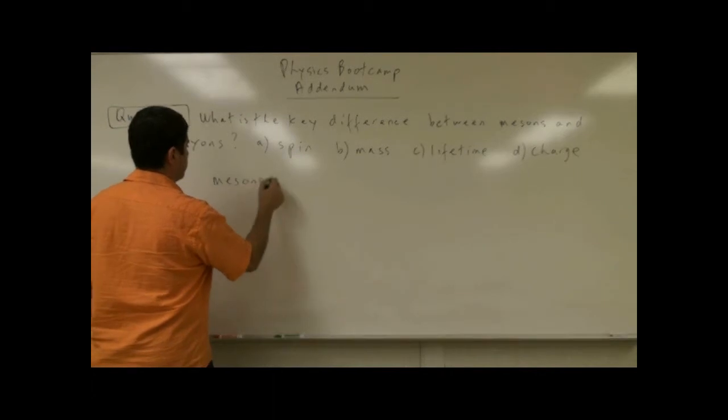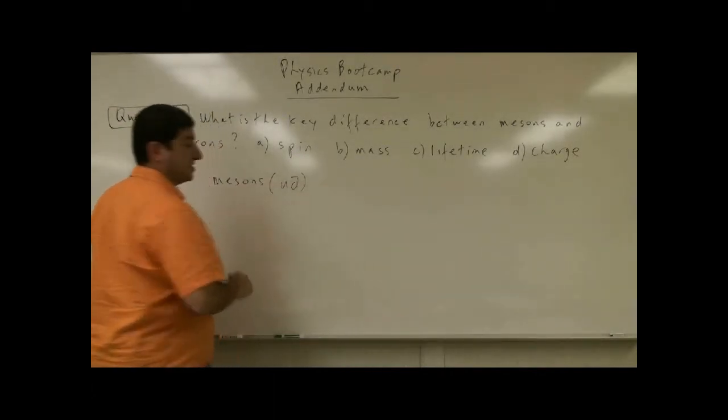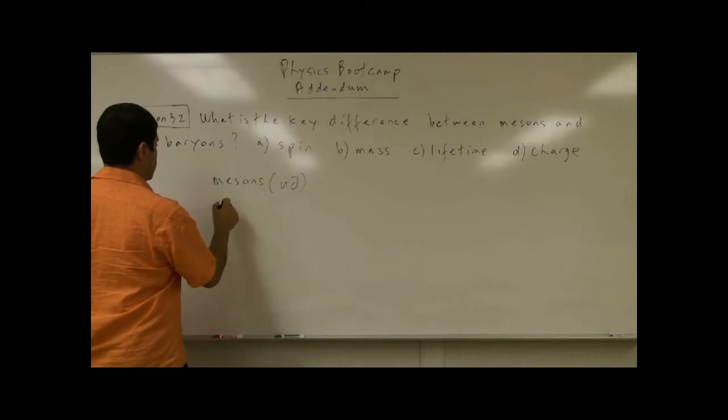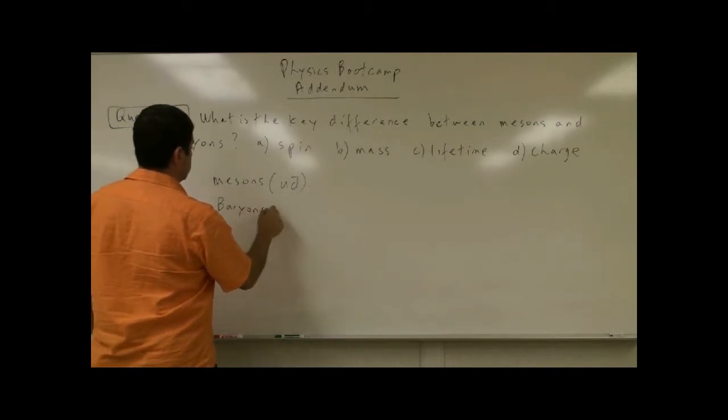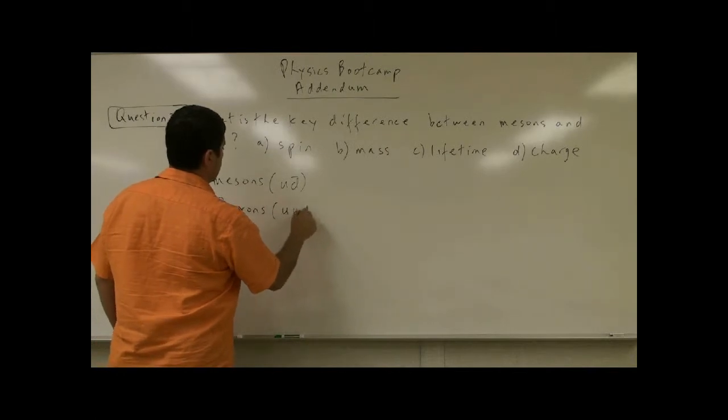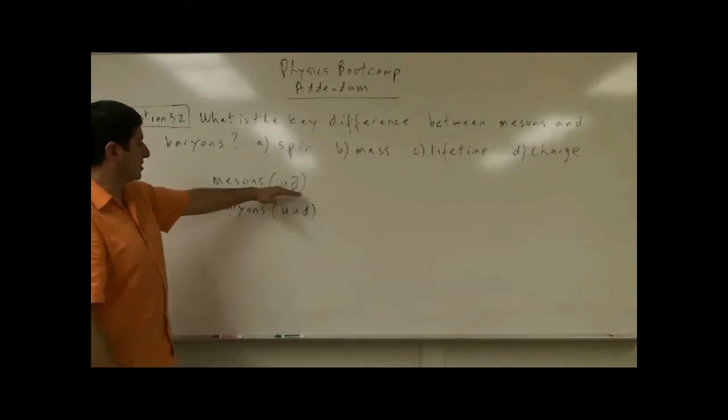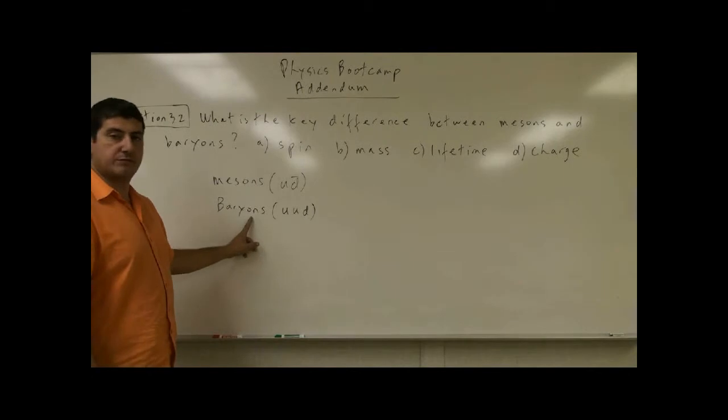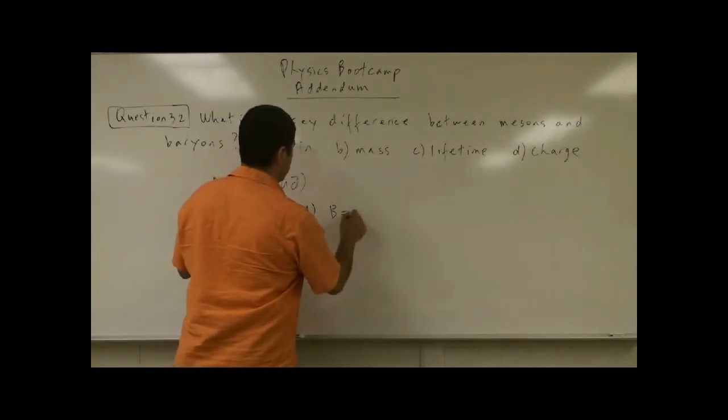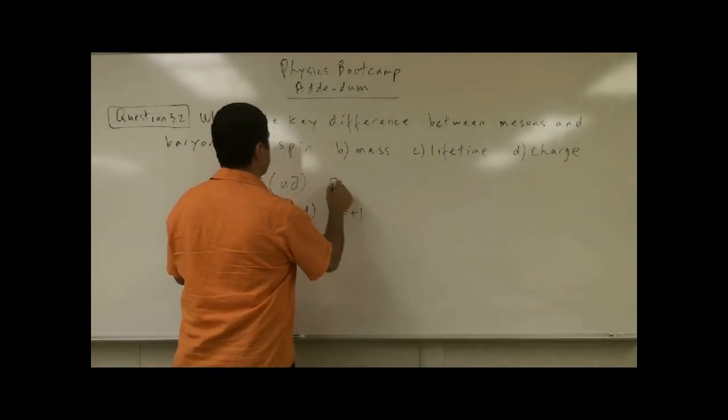So let's put this up here, such as up anti-down, and baryons like such as two up and a down. So these are three quarks, these are two quarks. The baryon number of these is one. The baryon number of this is zero.